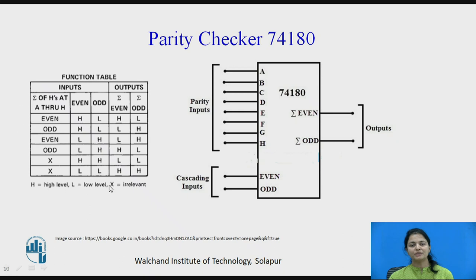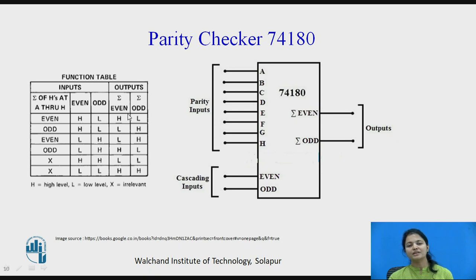The truth table is given for the 74180. An 8-bit number with bits A, B, C, D, E, F, G is provided as input, and the IC outputs whether the parity is even or odd. There are also two additional pins available for cascading, allowing multiple parity checker ICs to be connected together.